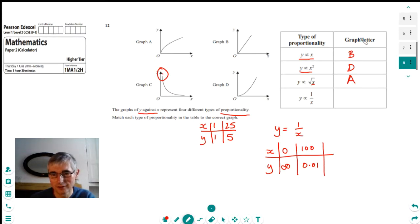If we did an even bigger value, if we did 1,000, then we'd get that y was equal to 0.01. So, as x increases, the value of y gets closer and closer to the x-axis, but never actually reaches it. It's known as an asymptote. So we can see that graph C is the one that satisfies this proportionality.